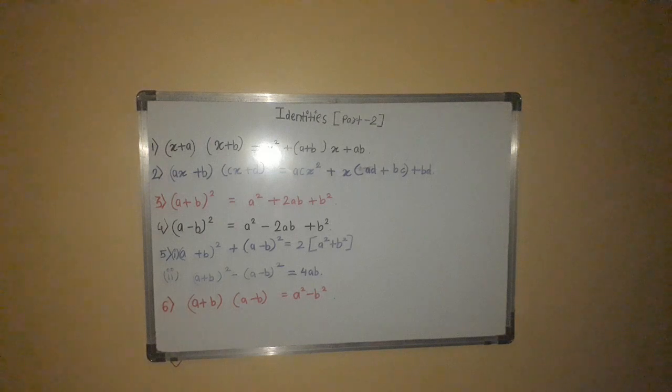Third identity is of A plus B whole square. Fourth identity is of A minus B whole square.